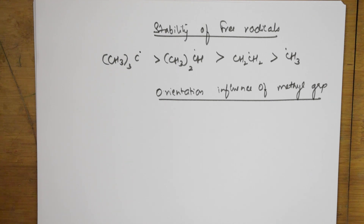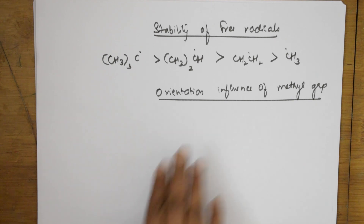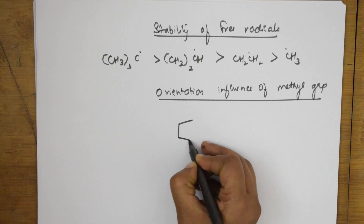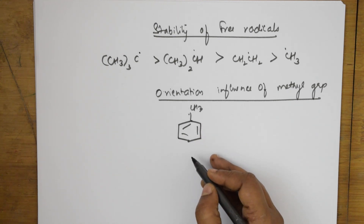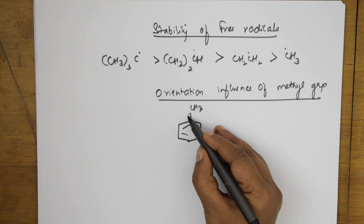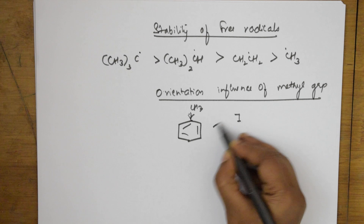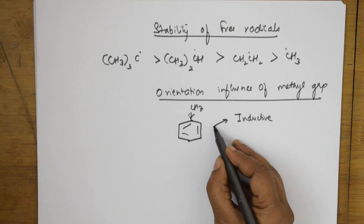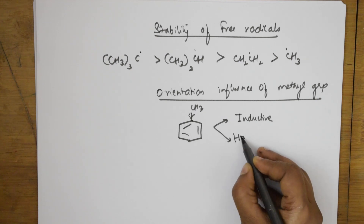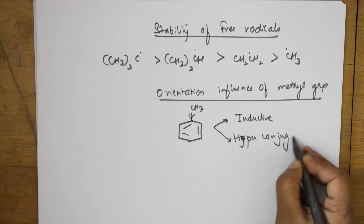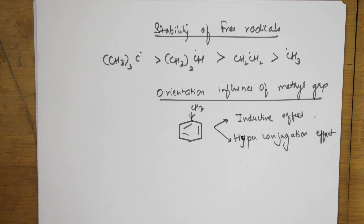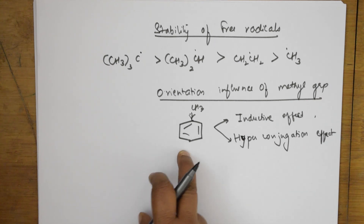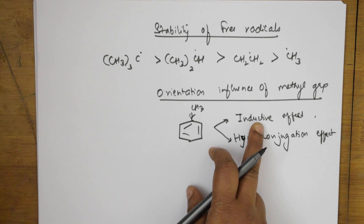We will take methyl benzene (toluene) as an example. This ortho-para directing influence is partly due to the inductive effect and partly due to hyperconjugation. The orientation influence of the methyl group is explained both by the plus-I inductive effect and by hyperconjugation. In methyl benzene, the carbon carries three hydrogens. Both effects are seen: inductive effect as well as hyperconjugation effect.